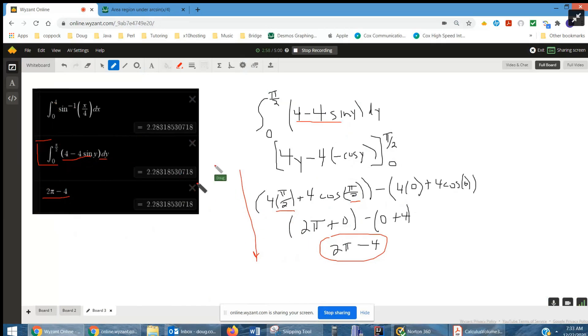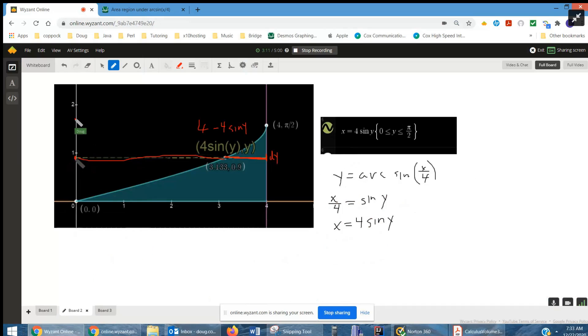2 pi minus 4. Again, with respect to y, you had to solve for x in terms of y, so that you could get that distance from 0 to here, subtracting from 4 to get the length of the rectangle. There you go.